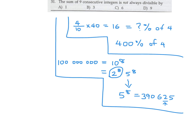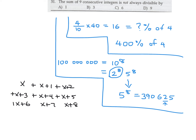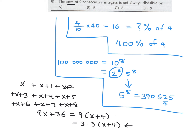The sum of nine consecutive integers is not always divisible by what? Write them as x through x+8; the sum is 9x plus 36, which equals 9 times (x+4), also 3 times 3 times (x+4). This is divisible by 1, 3, and 9, but not necessarily by 6, since there's no guaranteed factor of 2. So number 31 is C.